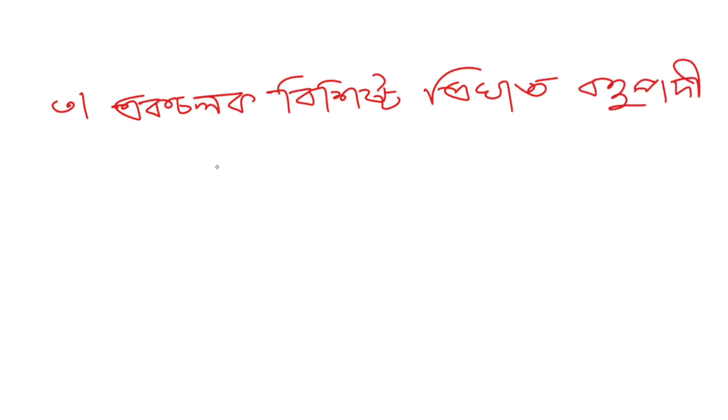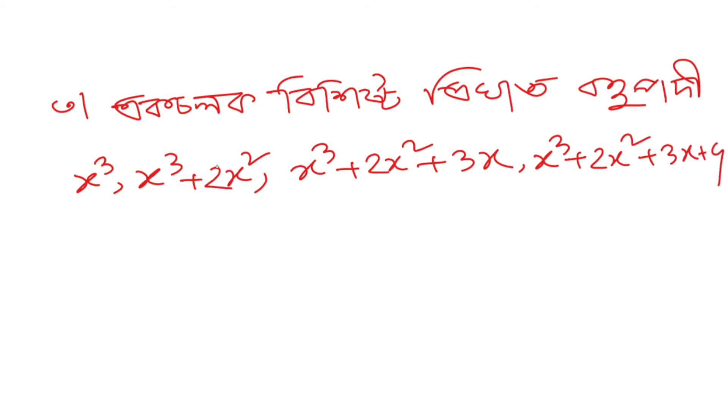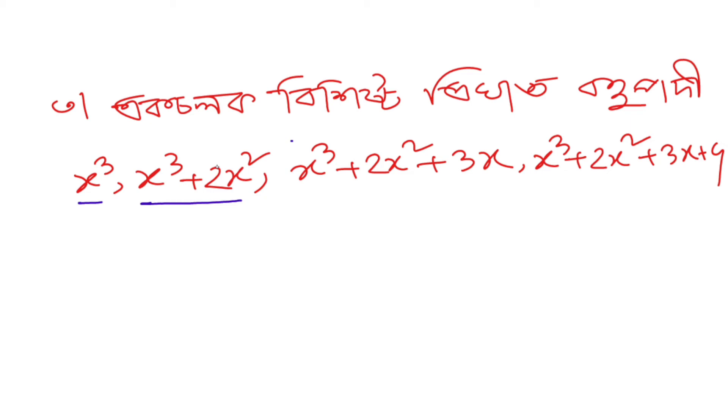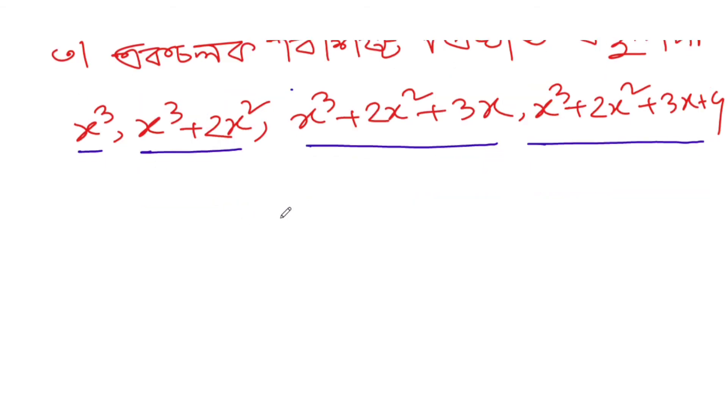With three terms, we get expressions like x³ plus 2x², or x³ plus 2x² plus 3x. We can also have x³ plus 2x² plus 3x plus 4, which has four terms.